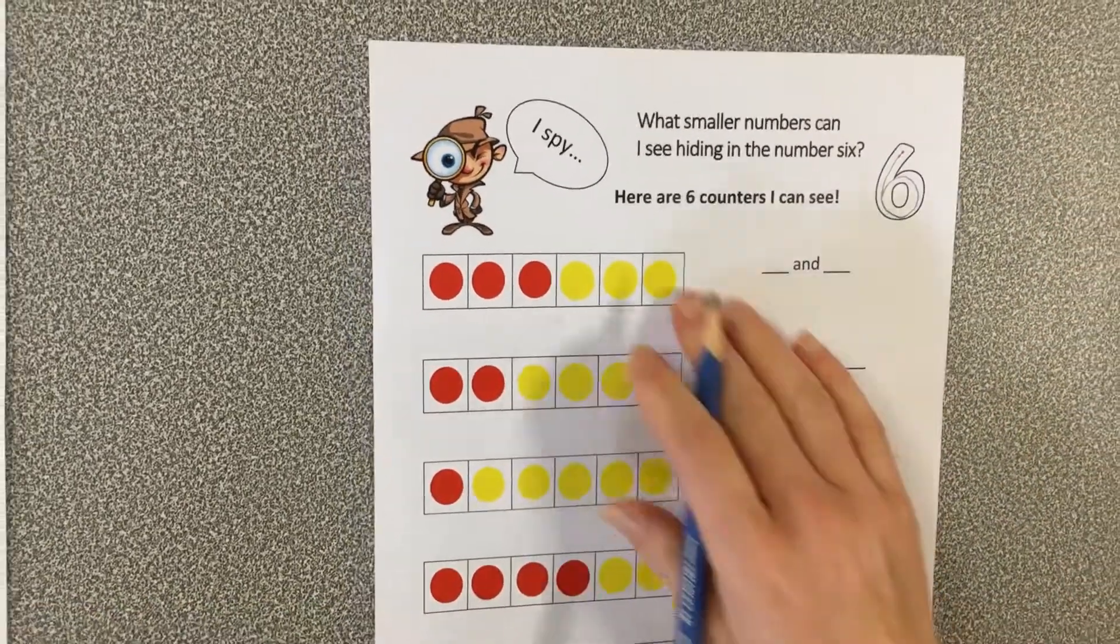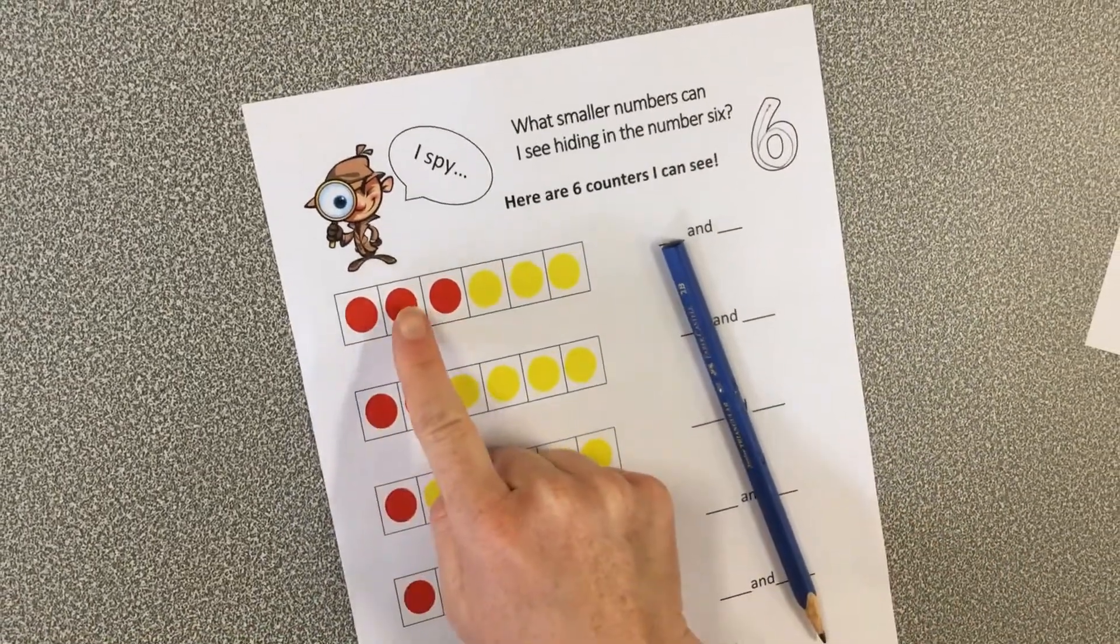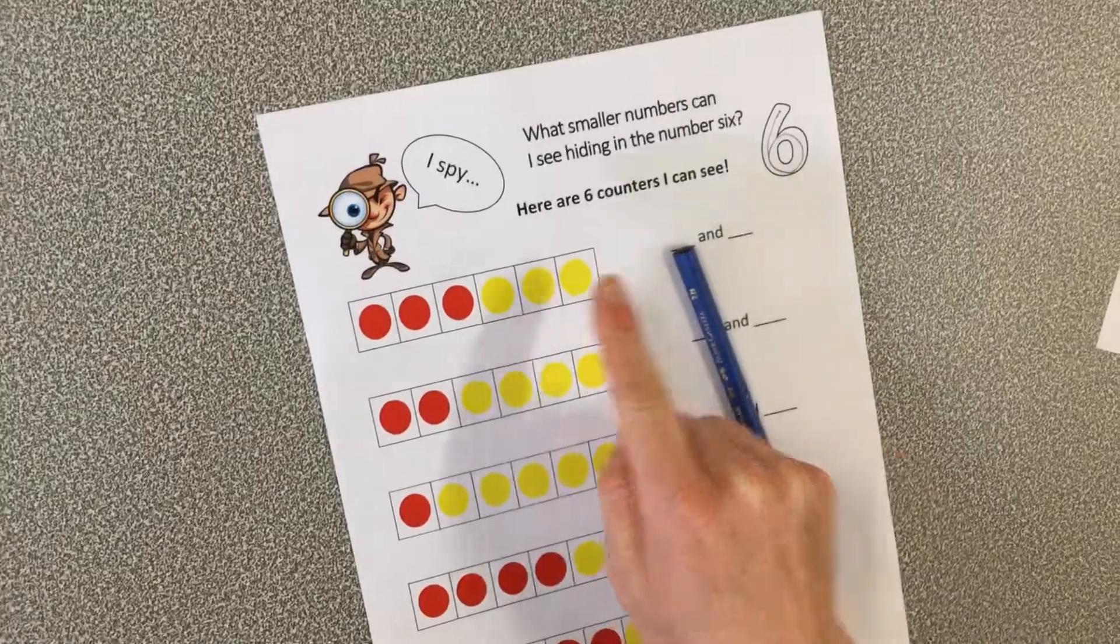Now, what we need to do is check first that they're going to be six counters. One, two, three, four, five, six.